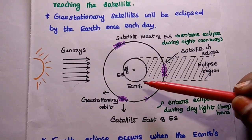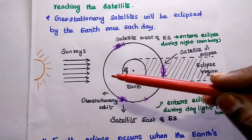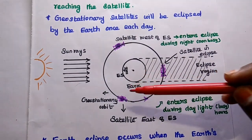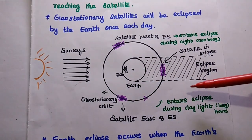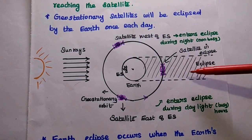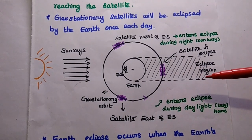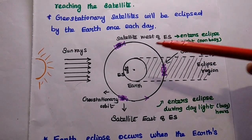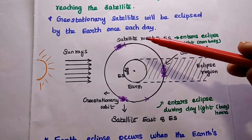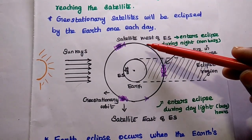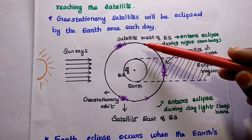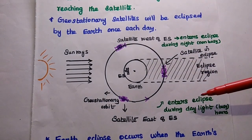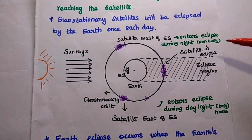When the earth station is pointing towards the sun, a satellite east of the earth station enters the eclipse region during daylight and early evening hours — that is busy hours. A satellite west of the earth station enters the eclipse during night and early morning hours — that is non-busy hours.